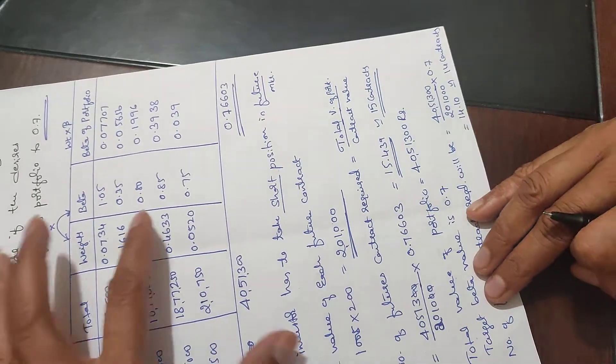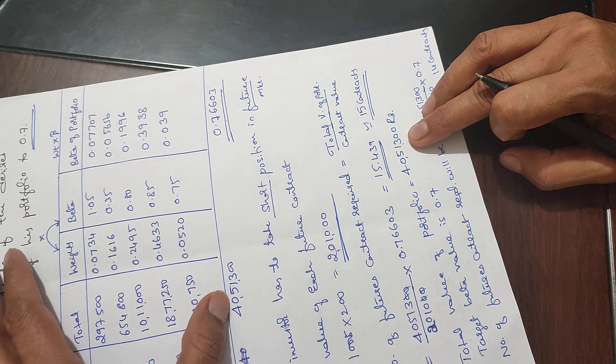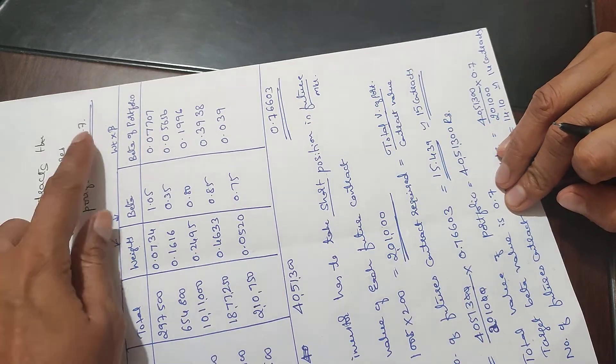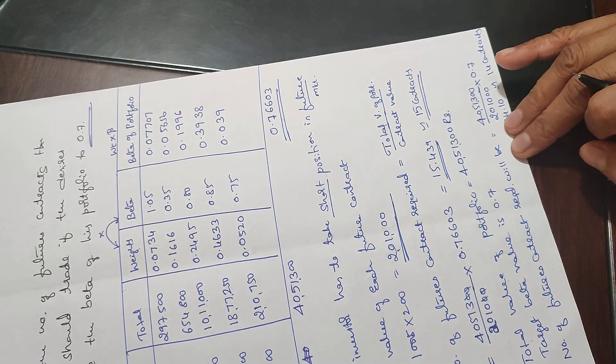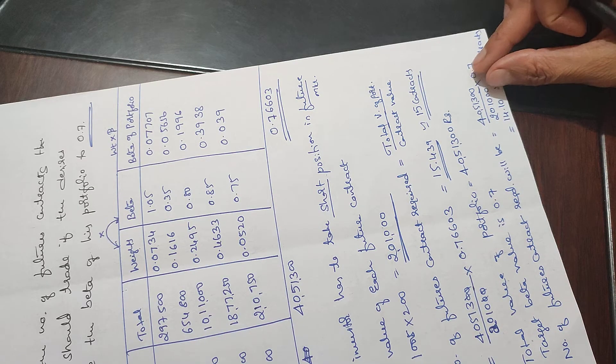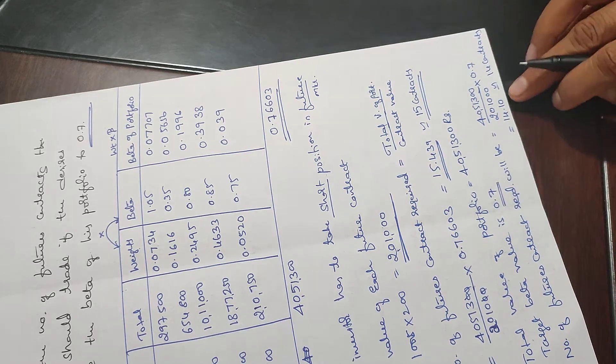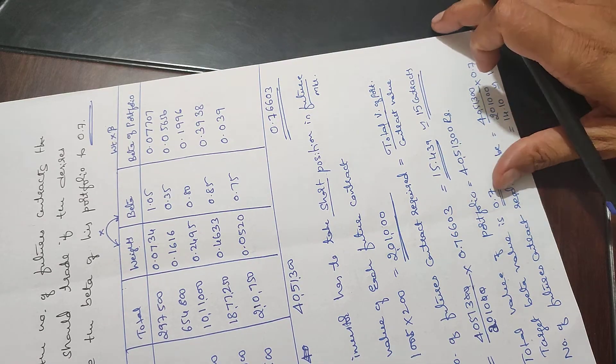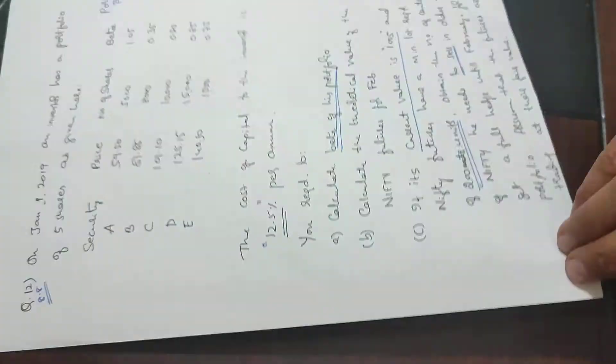If the target beta value is 0.7, then the number of contracts required is 40 lakh 51,300 divided by 2 lakh 1,000 times 0.7, which gives 14 contracts. This is the solution for this problem.